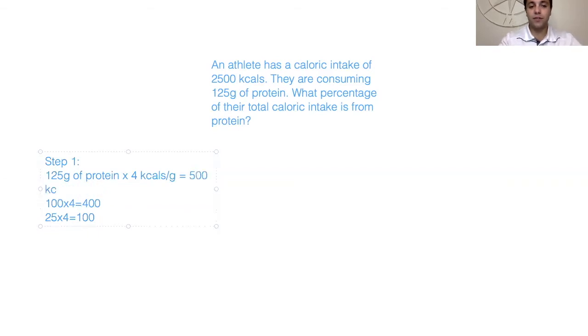Then your next step, you would have to add this 100 to the 400 and that would give us 500 kcals. So we have 500 kcals of protein that we're consuming. Remember our total is 2500.